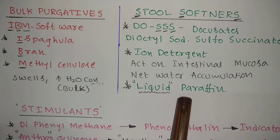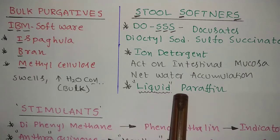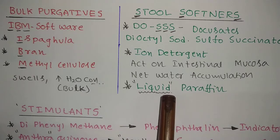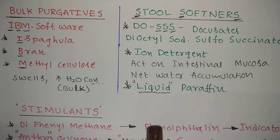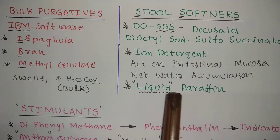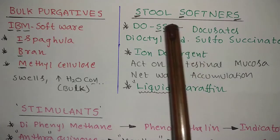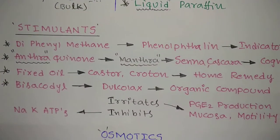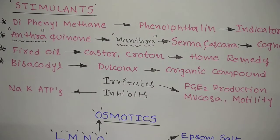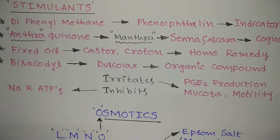The third drug under stool softeners is liquid paraffin. There are three types of paraffin: hard, soft, and liquid. We use liquid paraffin here because the stool or fecal matter is already hard. Liquid paraffin lubricates the hard stool, making it soft so the patient can excrete the fecal matter smoothly.